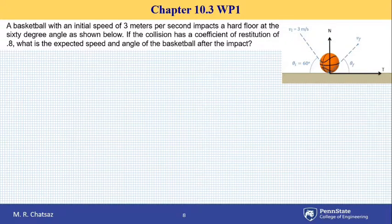So the basketball is coming in with the initial speed of 3 meters per second. Let's say this is the incoming velocity. It hits the hard floor and rebounds in some direction and has some final velocity as shown.